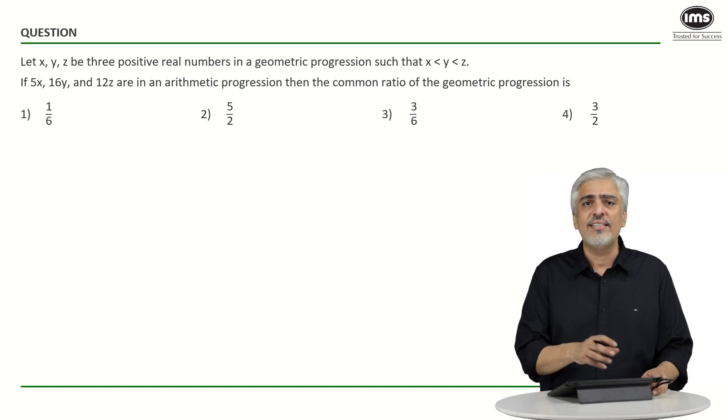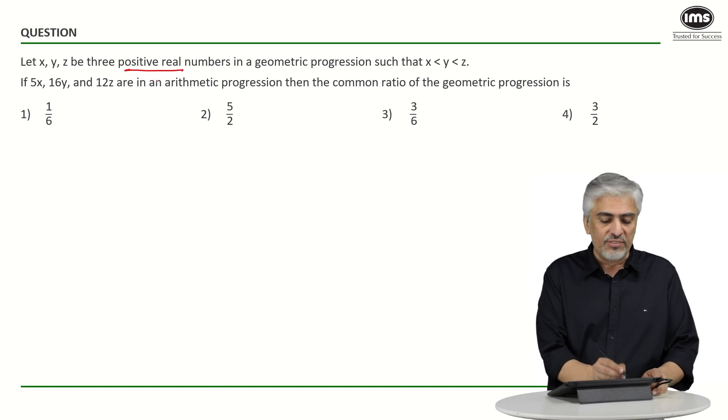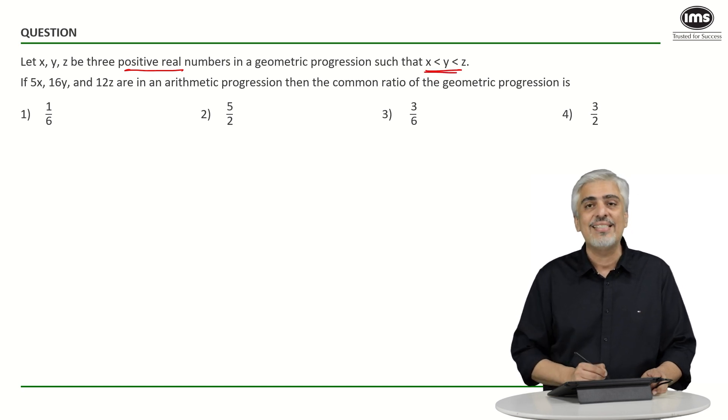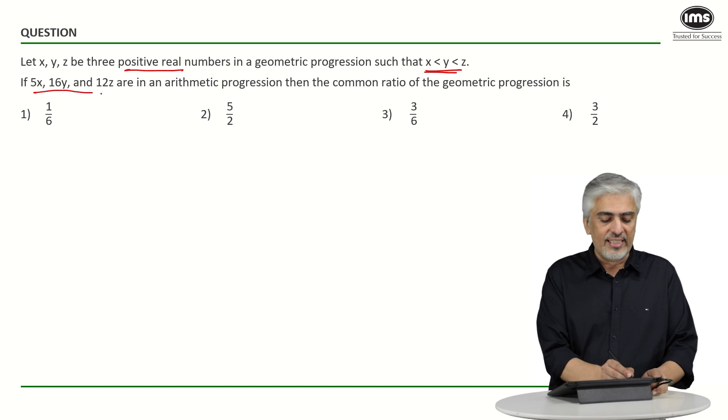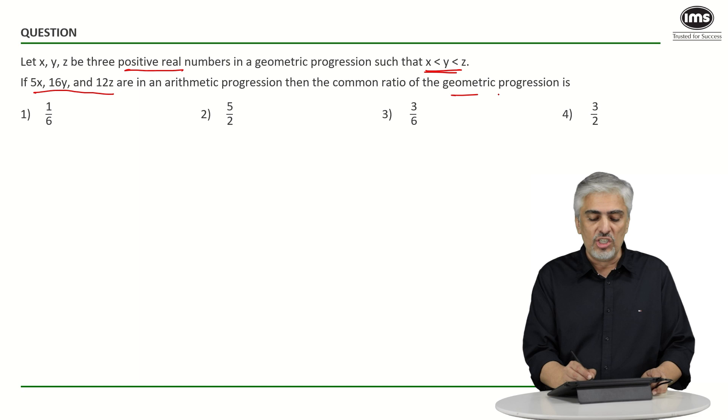Let's look at why it was my favorite and why I think it could have been solved by a much smarter approach. The question tells us that x, y, z are three positive real numbers in a GP where x is less than y is less than z. They've told us something about 5x, 16y, and 12z being in AP.